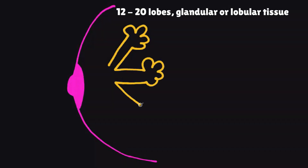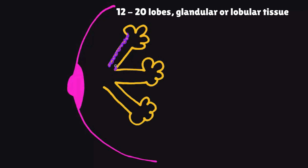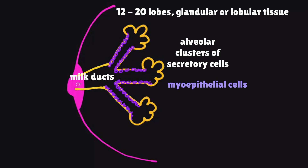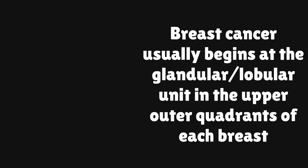Let's start with a review of breast anatomy. The breast is organized into 12 to 20 lobes with glandular or lobular tissues. The lobules have clusters of secretory cells arranged in an alveolar pattern and are surrounded by myoepithelial cells. The glands drain into milk ducts, with about 5 to 10 collecting ducts that lead to or drain into the nipple. Breast cancer typically arises in the glandular or lobular unit of the breast, and there is a disproportionate amount of glandular tissue in the upper outer quadrant of each breast. This is why breast cancer most commonly arises in the upper outer quadrants.